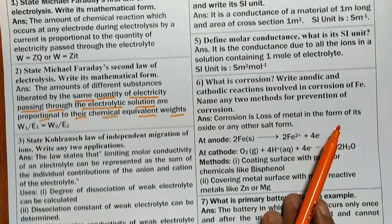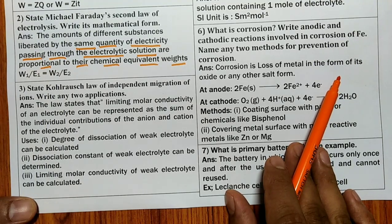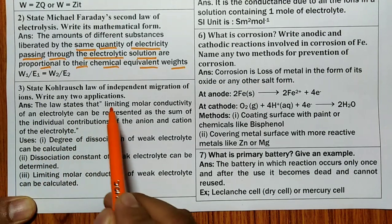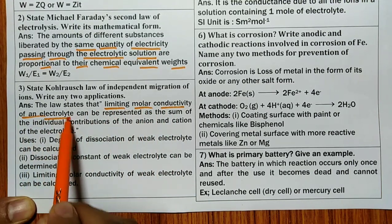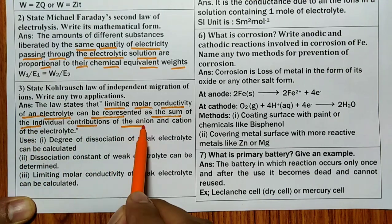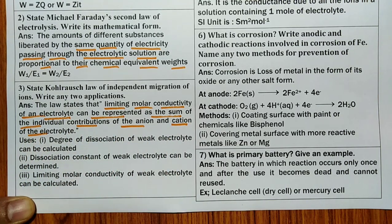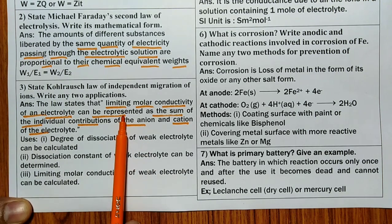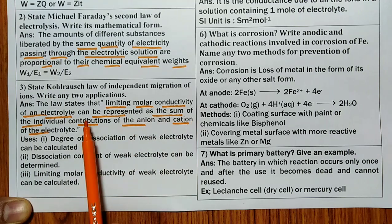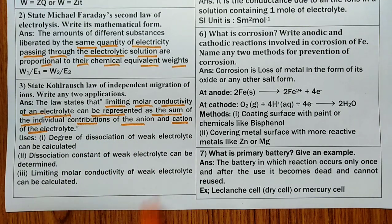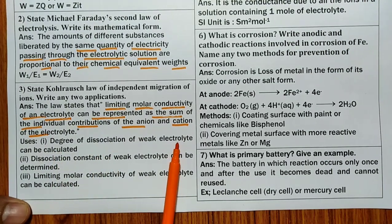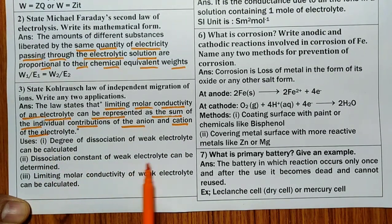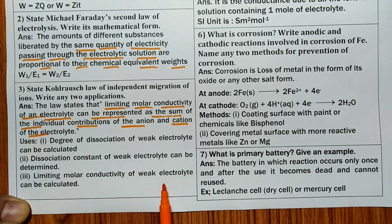This is called Kohlrausch's law of independent migration of ions. The limiting molar conductivity of an electrolyte can be represented as the sum of individual contributions of the anion and cation of the electrolyte. When a substance (electrolyte) is diluted to a very high degree, the molar conductivity obtained is represented as the sum of individual contributions of anion and cation respectively. Two applications: calculate degree of dissociation, and calculate dissociation constant of a weak electrolyte using limiting molar conductivity.